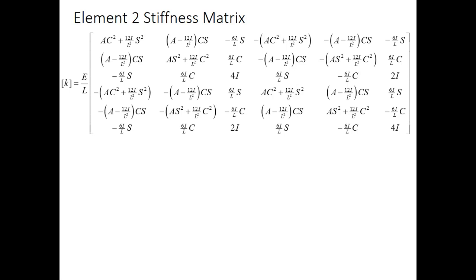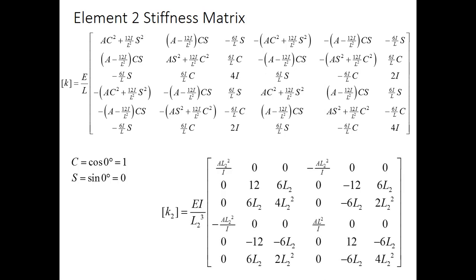Let's move on to element 2. We start with the same matrix, but now, because element 2 is aligned with the global x-axis, the angle is 0 degrees, so cosine is 1 and sine is 0. That gives us a much simpler setup for the stiffness matrix for element 2.